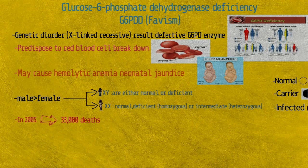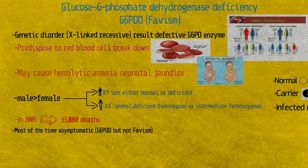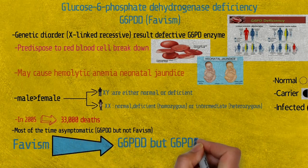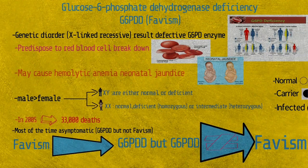Glucose-6-phosphate dehydrogenase deficiency is the second most common human enzyme defect after ALDH2 deficiency, being present in more than 400 million people worldwide, resulting in 33,000 deaths in 2015. Most of the time this condition is asymptomatic — we cannot call it Favism if it is asymptomatic. Favism is always due to G6PD deficiency, but not all G6PD deficiency results in Favism.